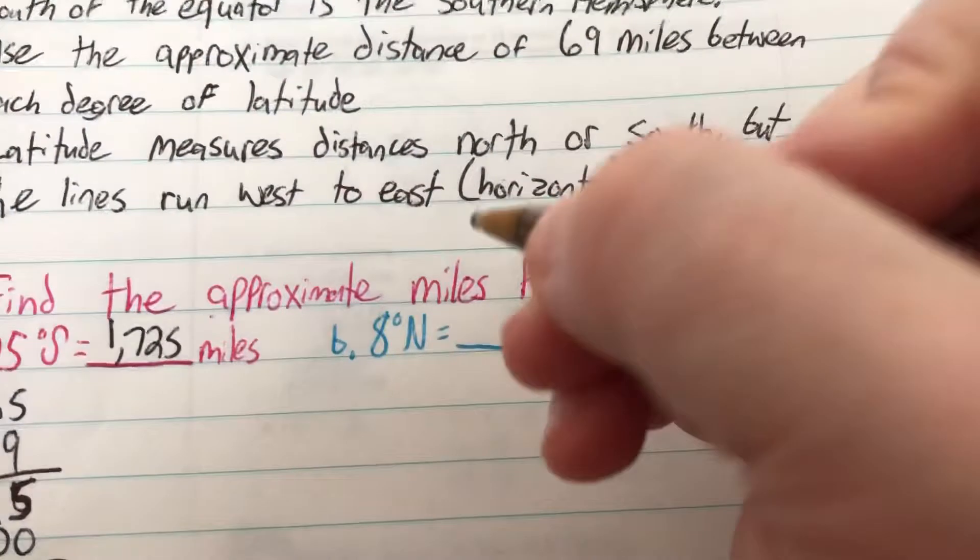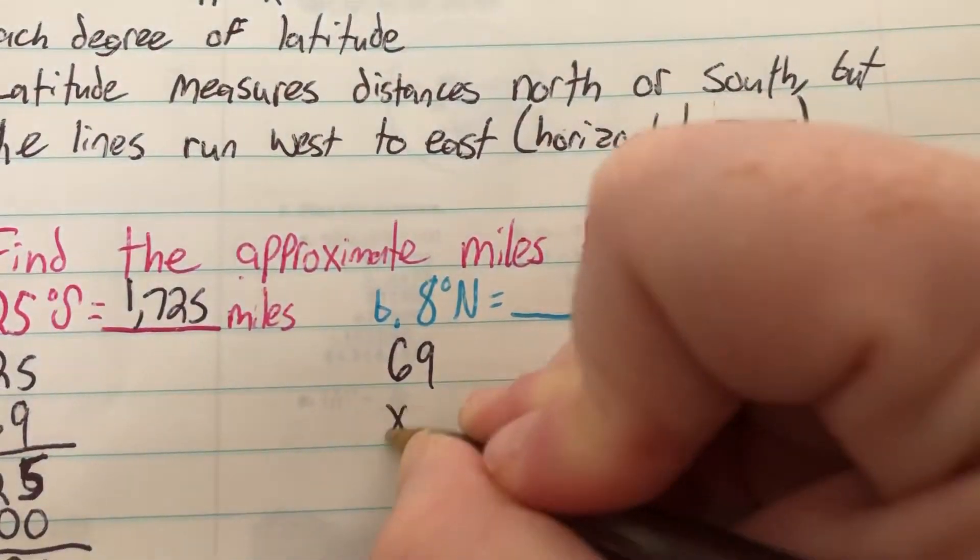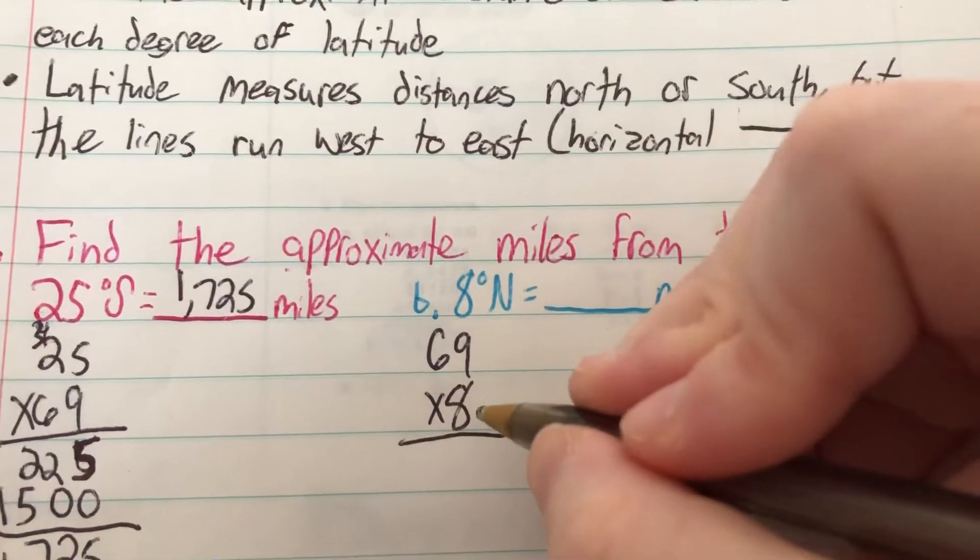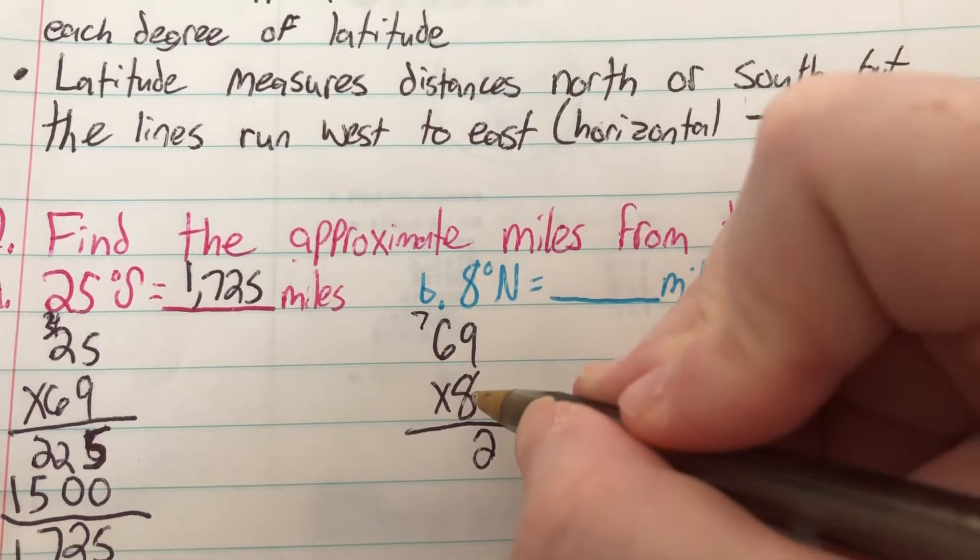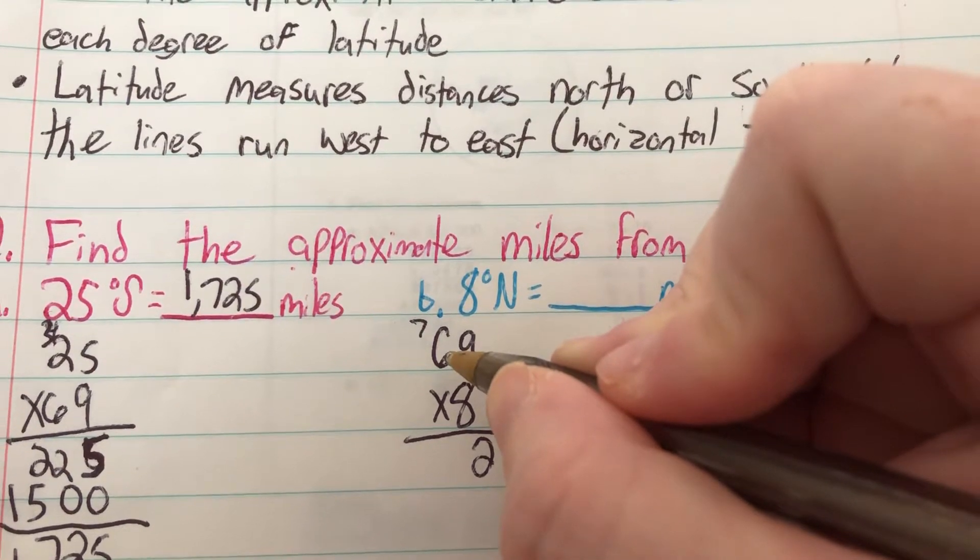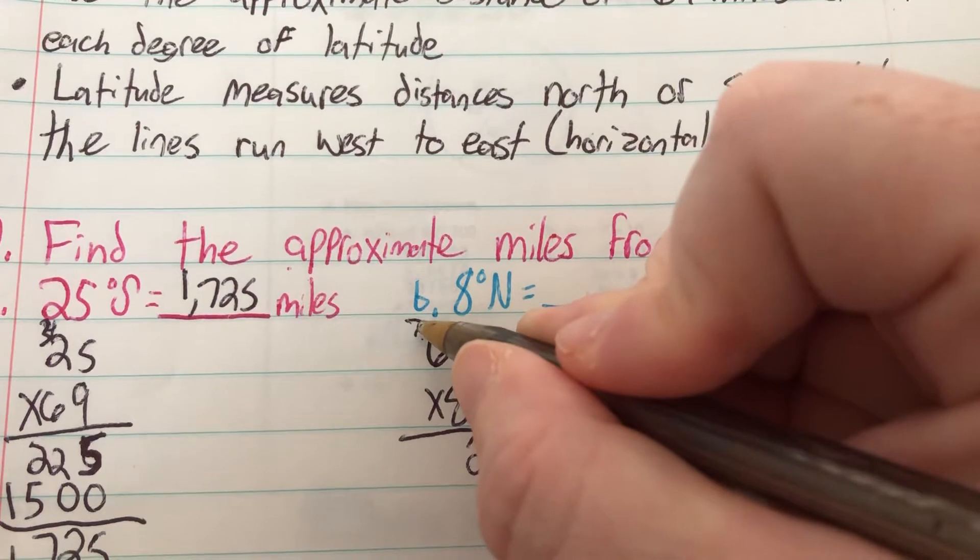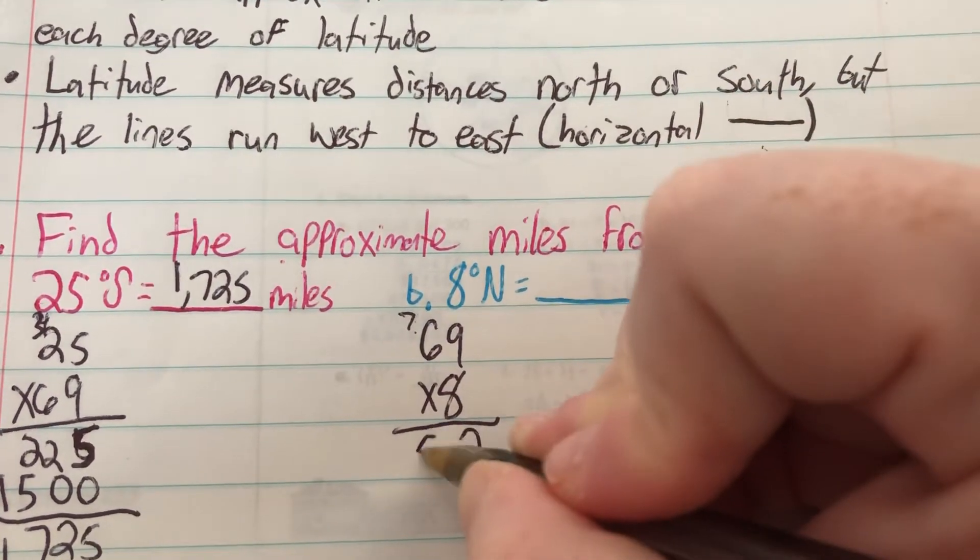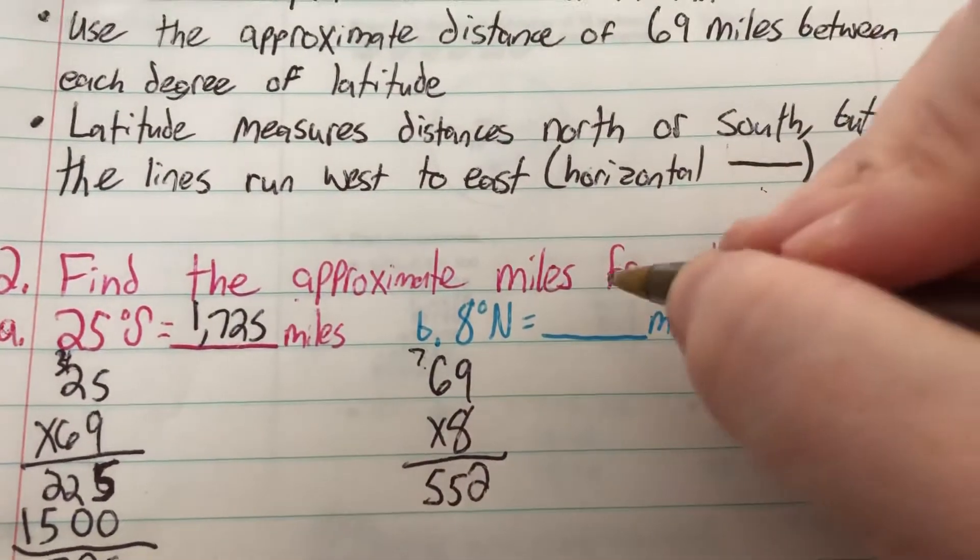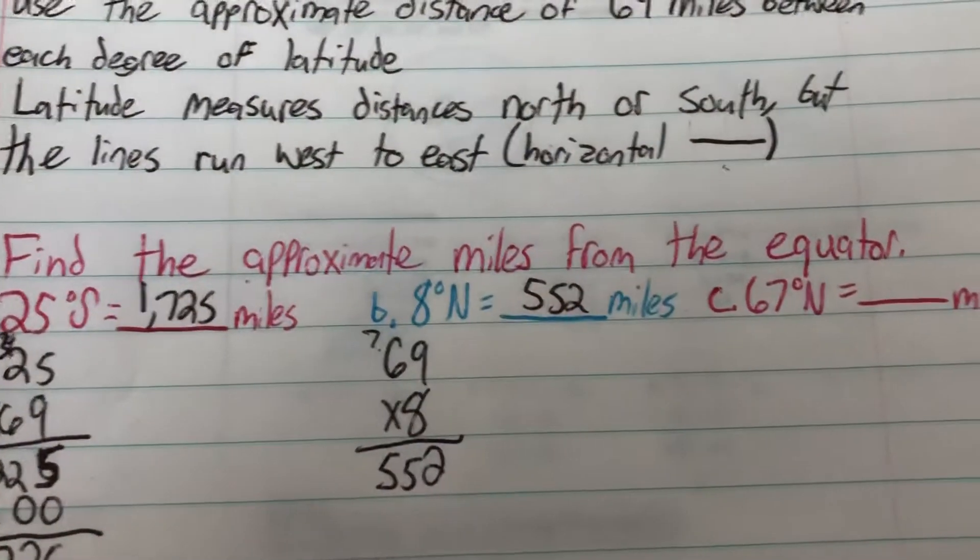So it is 1,725 miles south of the equator. For B, 8 degrees north. So 69 times 8. 8 times 9 is 72. 8 times 6 is 48, plus 7 is 55. So it is 552 miles north of the equator.